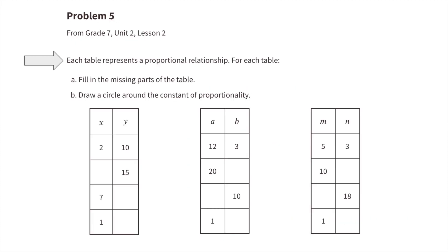Number five: each table represents a proportional relationship. For each table, fill in the missing parts. If 2x equals 10y, then 1x equals 5y, since 1 is half of 2 and 5 is half of 10. One x times 7 equals 7x and 5y times 7 equals 35y. One times 3 equals 3x and 5 times 3 equals 15y.